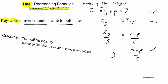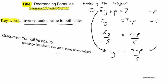A straightforward little example there. Using those keywords — inverse, undo, undoing what's done, and doing the same to both sides — it's about going from the original formula to where y is on its own. All the trimmings, being multiplied by 5 and having p added, are eliminated in a step-by-step logical process. Equal signs stay directly underneath each other; the left-hand side stays on the left, the right-hand side on the right.